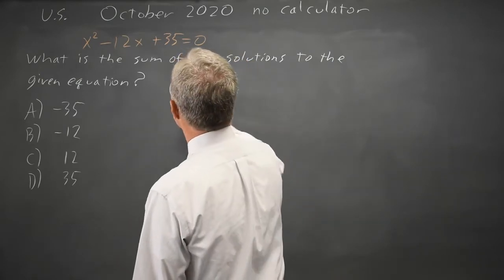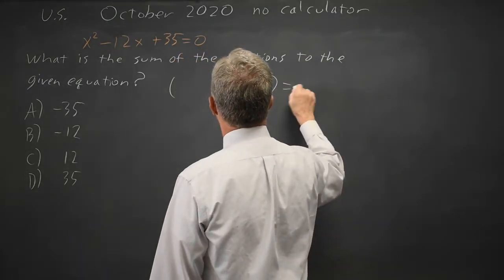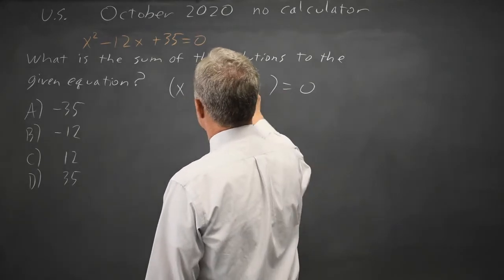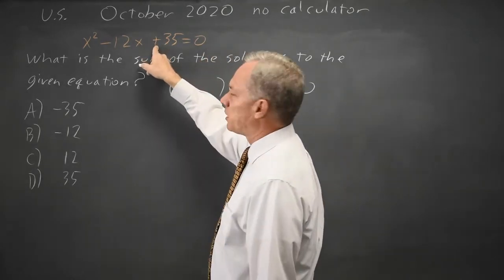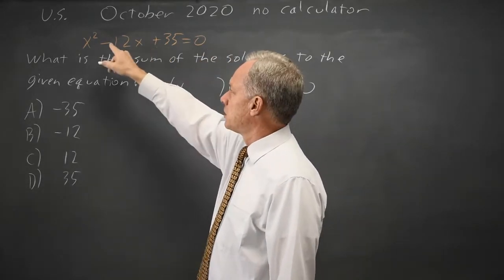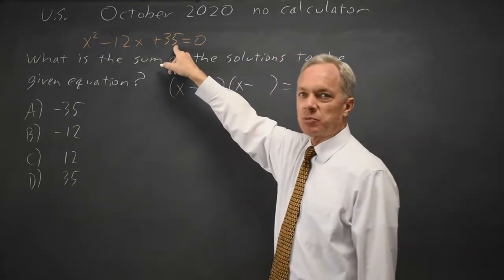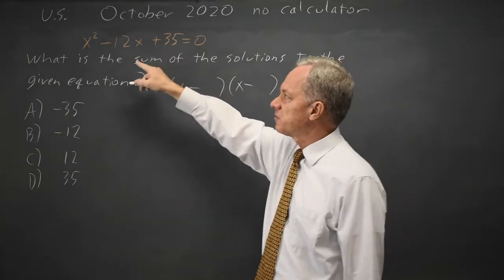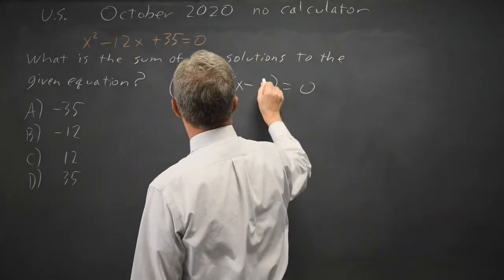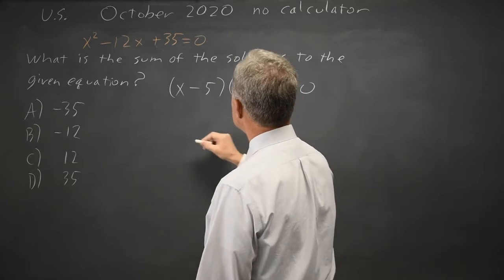So if I factor out of x and x, the last term is positive, so they're the same sign. The middle term is negative, so they're both minus. I need two numbers whose product is 35. My first guess would be 5 and 7, and they do add up to 12. So that looks good.